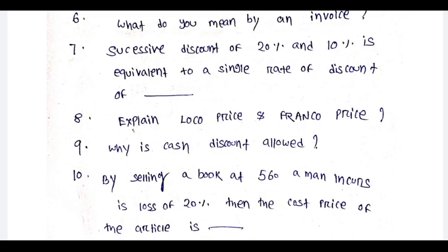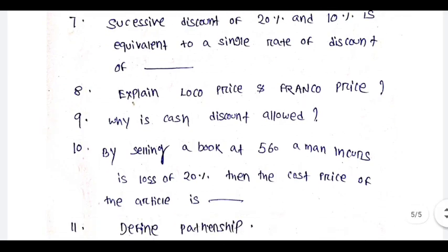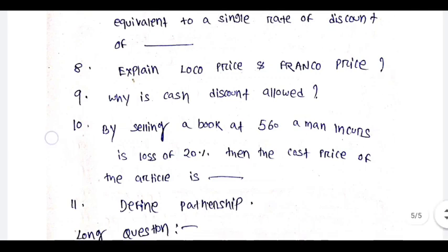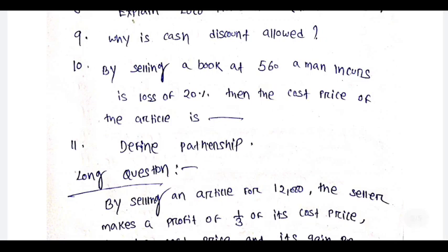What do you mean by comment box? Explain. Loco price and Franco price. Why is cash discount allowed? By selling a book at 560, a man incurs a loss of 20%. Then the cost price of the article is dash.